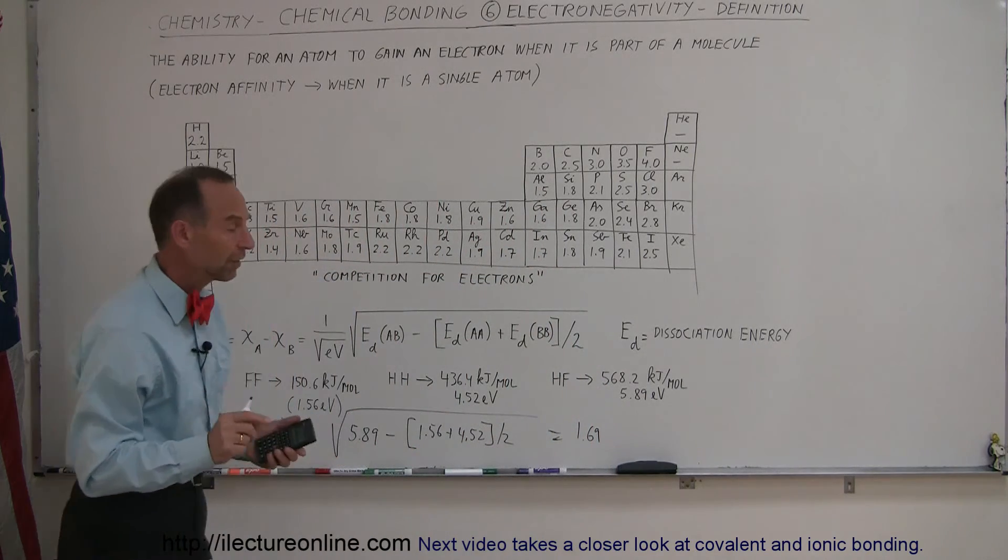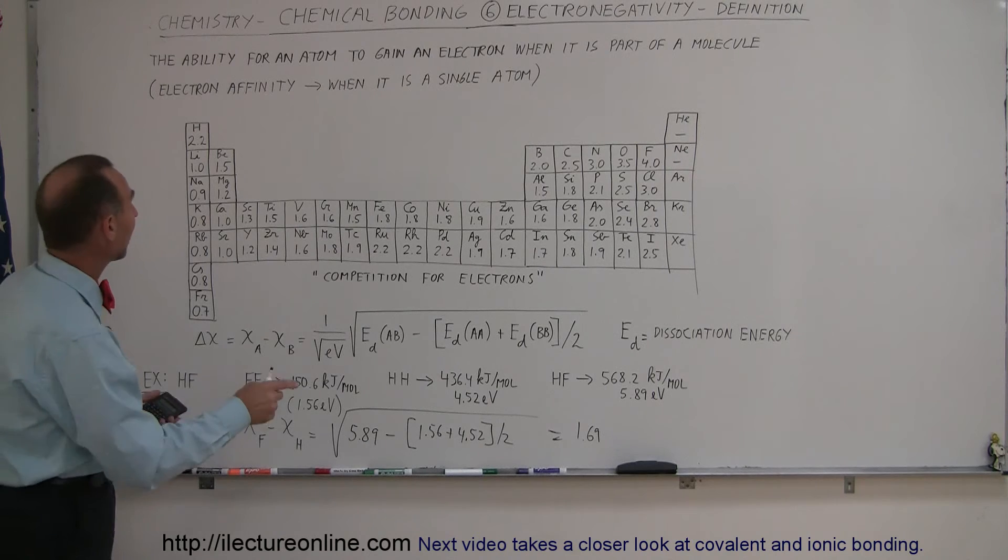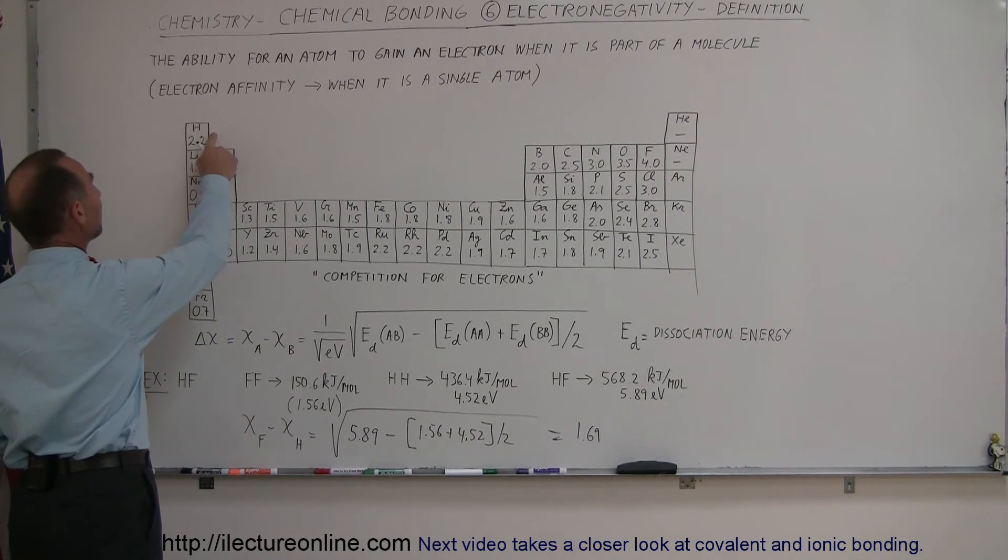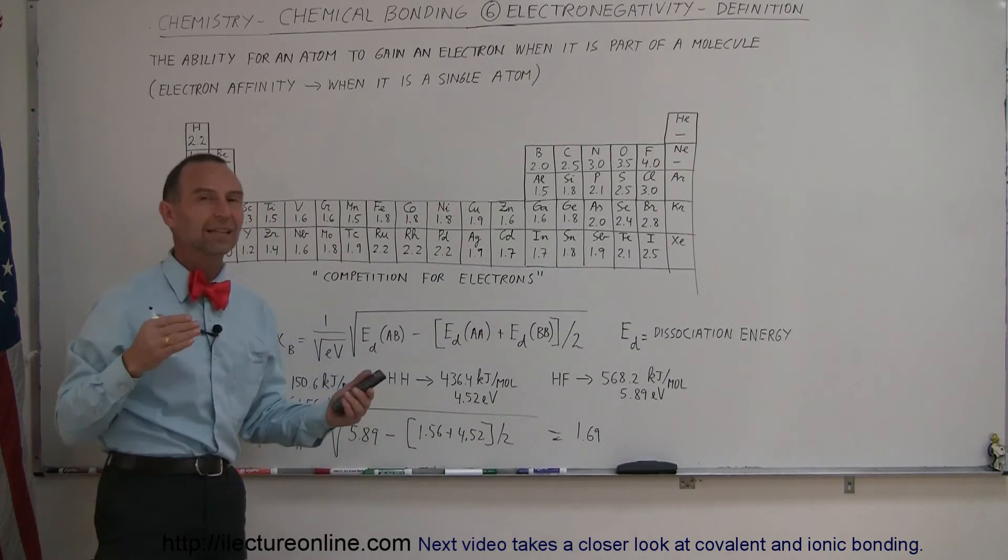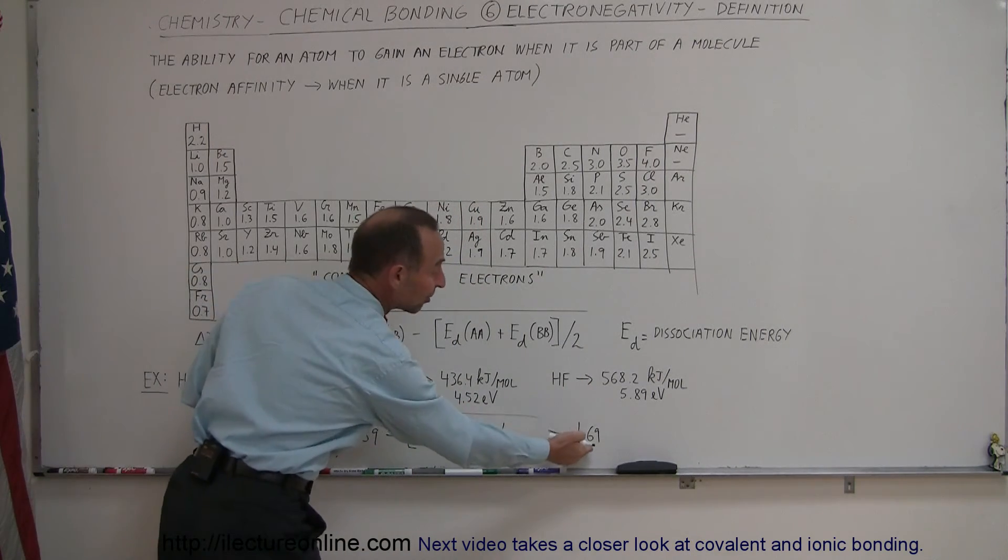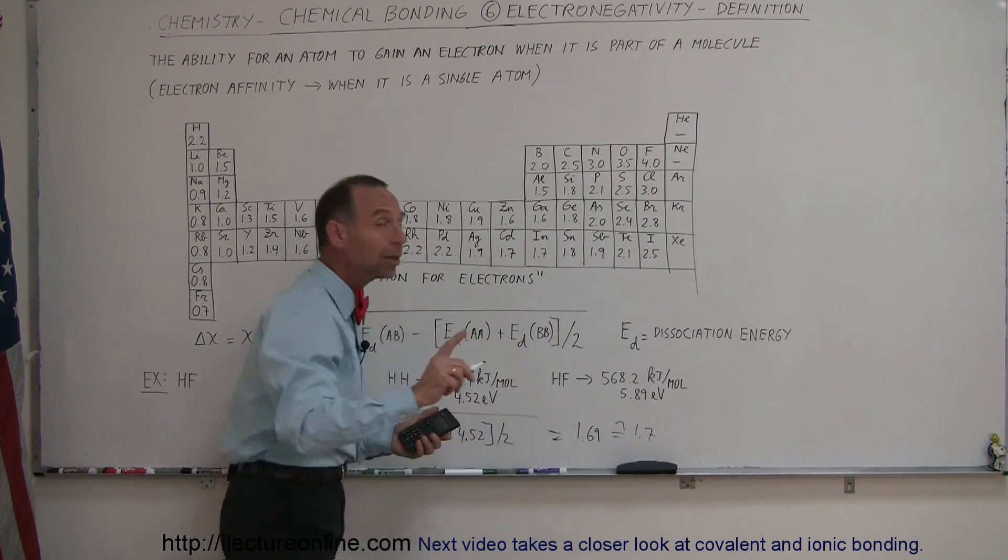So that is the calculated difference of the electronegativity between hydrogen and fluorine. Now hydrogen is basically 2.2, fluorine is 4.0, so you can see that the difference is actually 1.8. Our calculated value is about, we can say this is about 1.7. So pretty close but not exact,